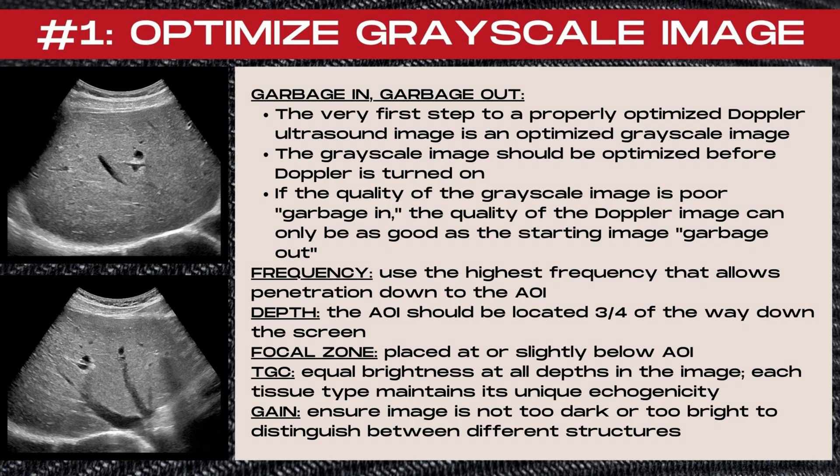Next look at the depth. The area of interest should be located about three-quarters of the way down the screen. Next look at the focal zones. The lowest focal zone should be placed at or slightly below the area of interest. TGC and gain are the next factors to consider. For TGC, you want equal brightness at all depths in the image, and each tissue type should maintain its unique echogenicity. For your gain, ensure the image is not too dark or too bright so that you can distinguish between different structures within the image.